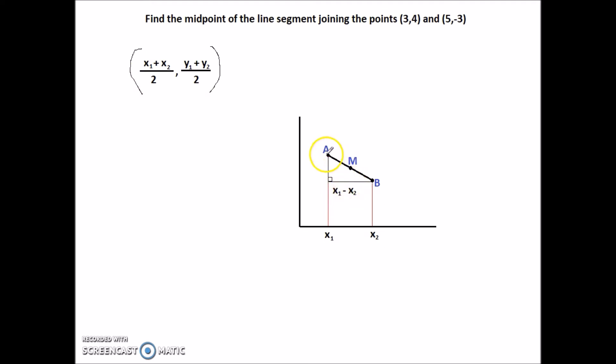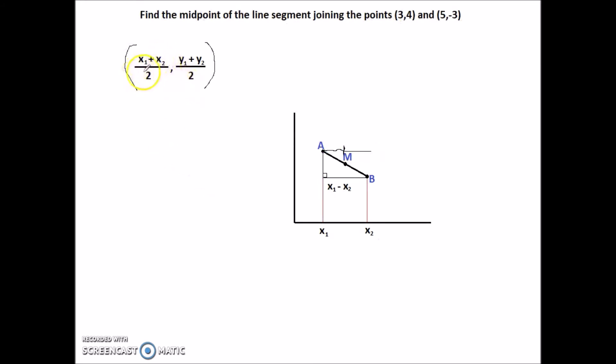So basically what I mean by run is how far laterally we go from A to B. And by dividing that by two, we're literally cutting it in half right at the halfway point. So this alone tells us that our midpoint is in line with the halfway point.